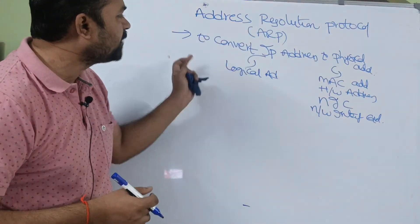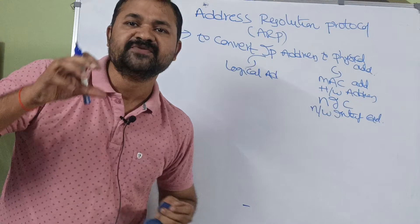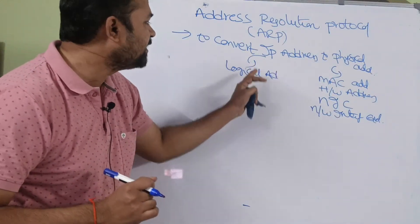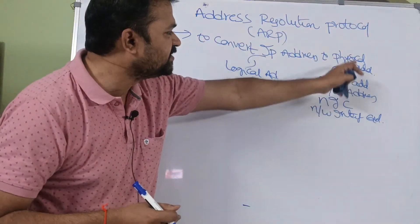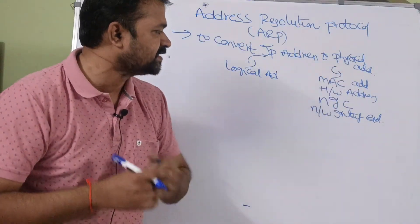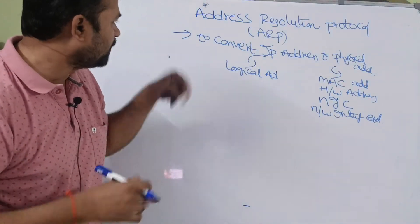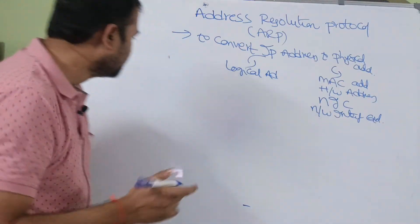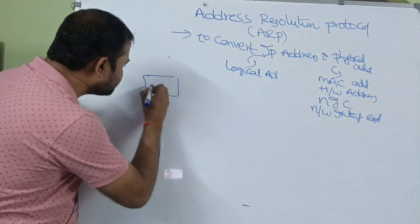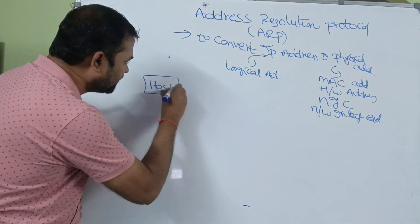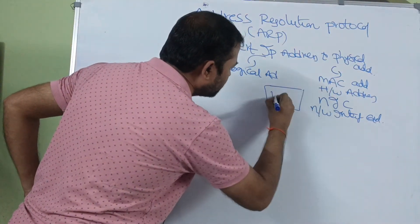So, what is the use of ARP? It is useful to convert an IP address to a physical address. An IP address can also be called a logical address, whereas a physical address can also be called a MAC address or hardware address. Now, let us see with the help of an example. Let us assume that the source host is host 1, whereas the destination host is host 2.